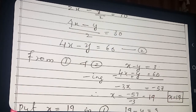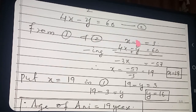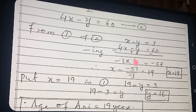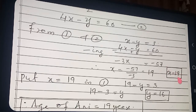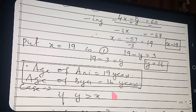Solving equations 1 and 2: subtract equation 1 from equation 2. We get 3X = 57, so X = 19. Substituting back: 19 − Y = 3, so Y = 16. Therefore age of Annie = 19 years and age of Biju = 16 years.